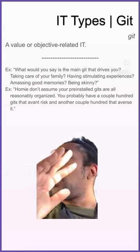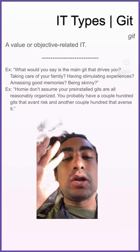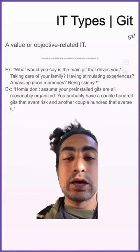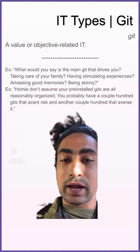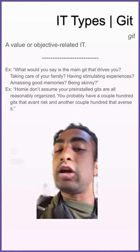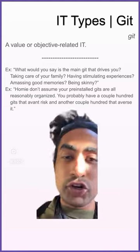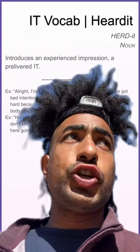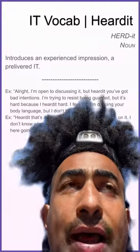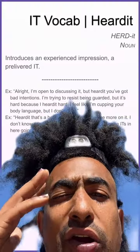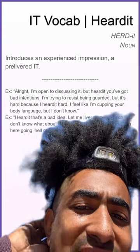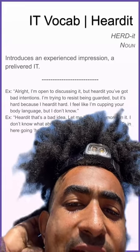Example: homie, don't assume your pre-installed gits are all reasonably organized — you probably have a couple hundred gits that avant risk and another couple hundred that averse it. Heard it: introduces an experienced impression, a pre-livered it. Example: all right, I'm open to discussing it, but heard it — you've got bad intentions. I'm trying to resist being guarded but it's hard because I heard it hard.